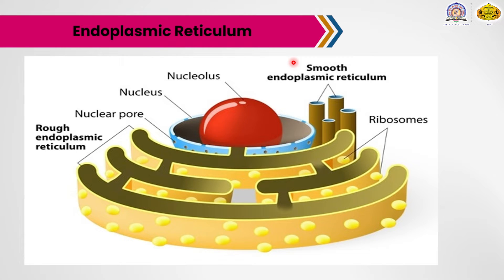In the 18th century, European ladies carried purses of netting called reticules. The name endoplasmic reticulum was first coined by Porter in 1953, and in 1945 it was first observed in electron micrographs of liver cells. That means the endoplasmic reticulum was first observed in real liver cells.